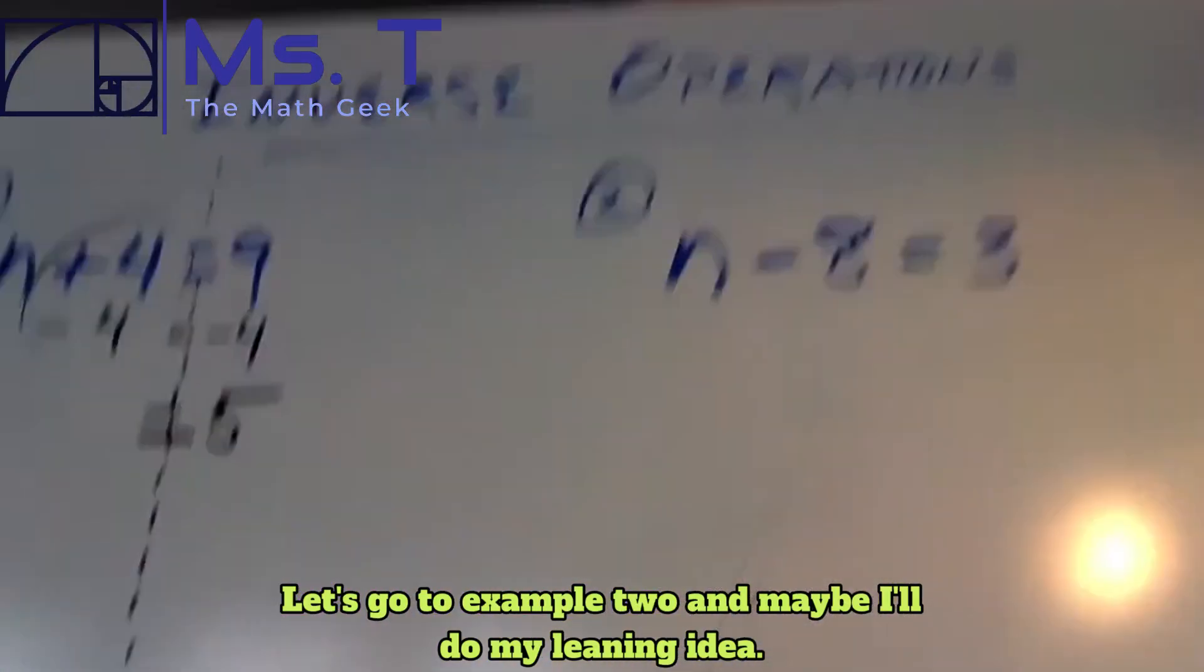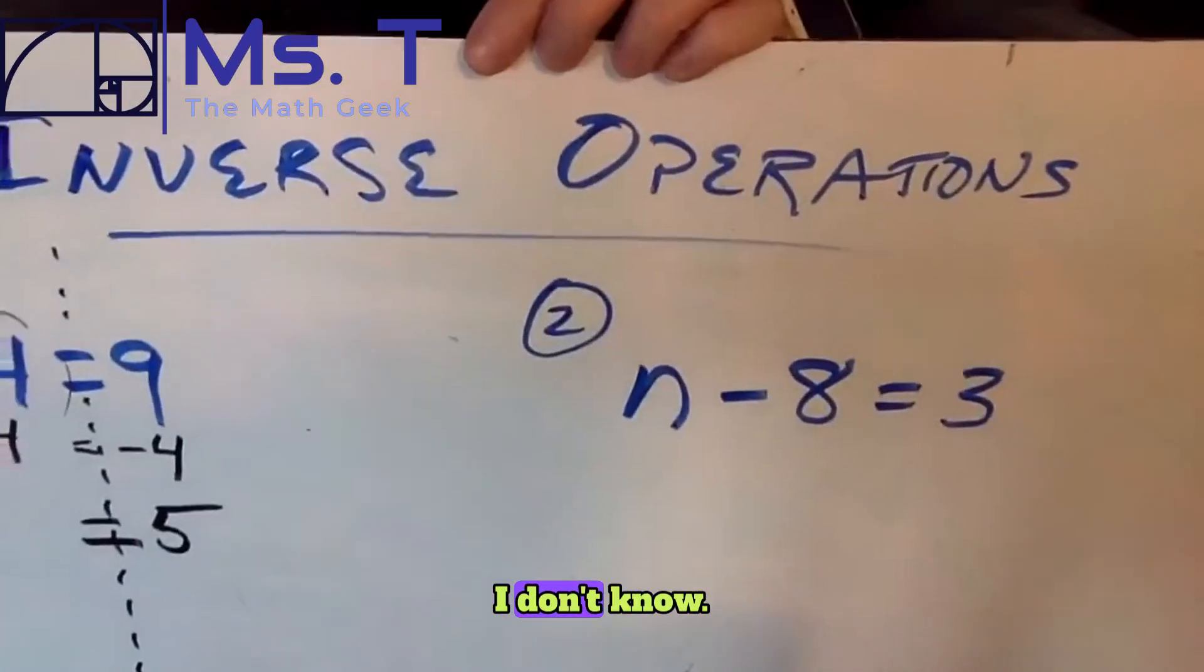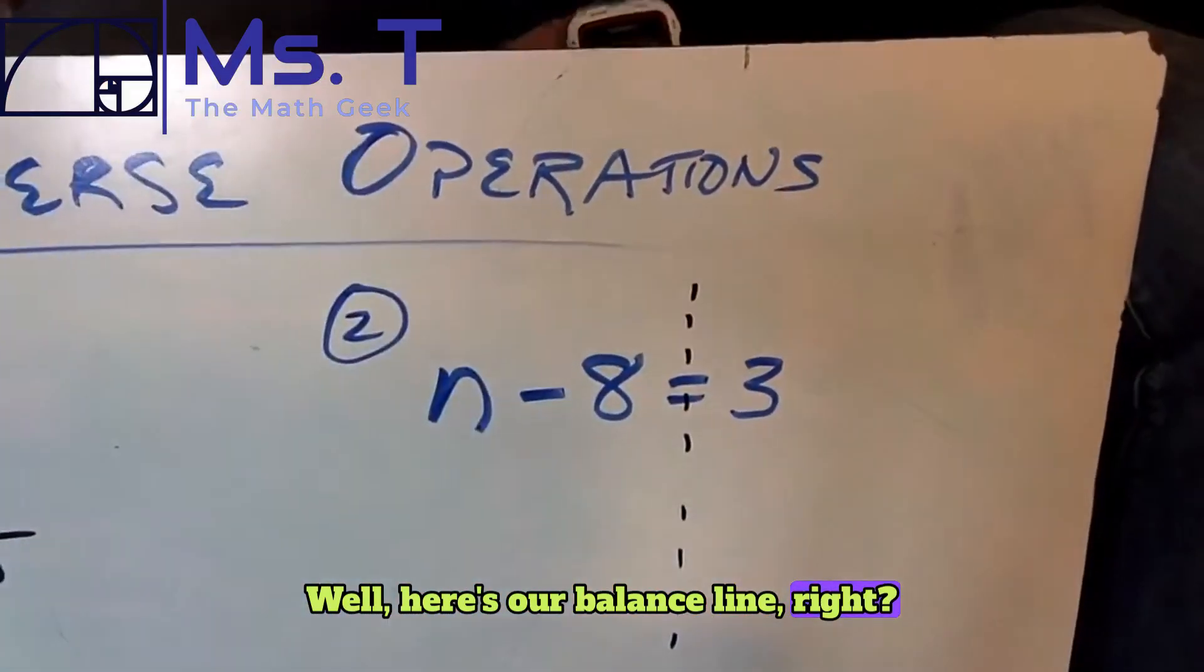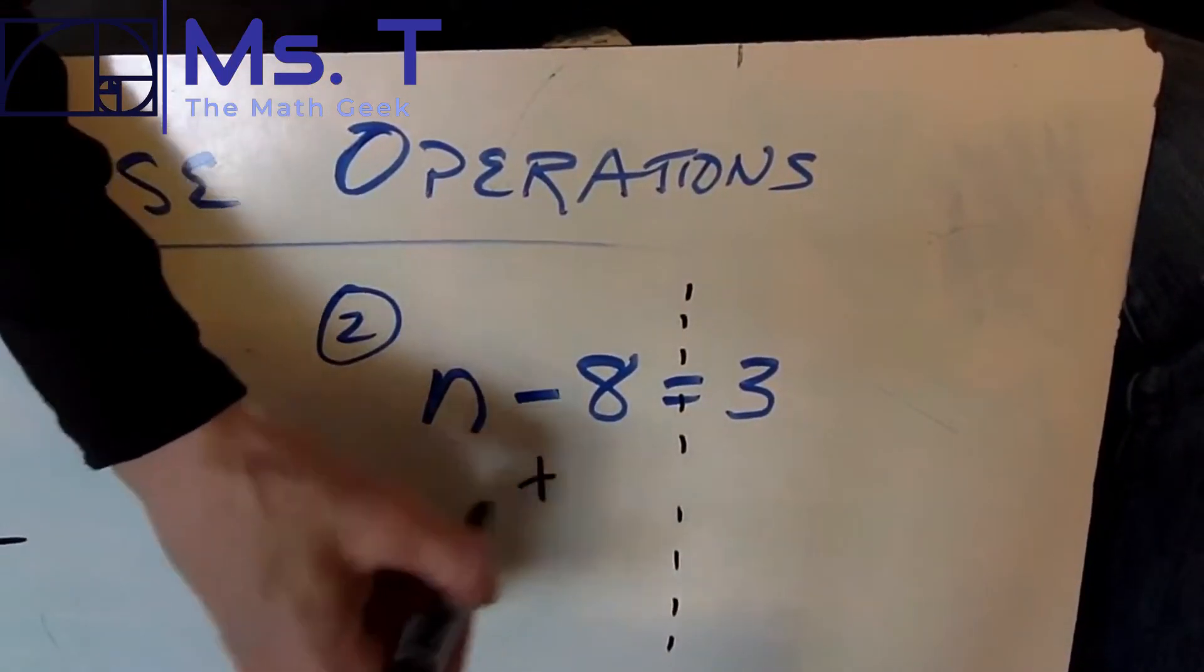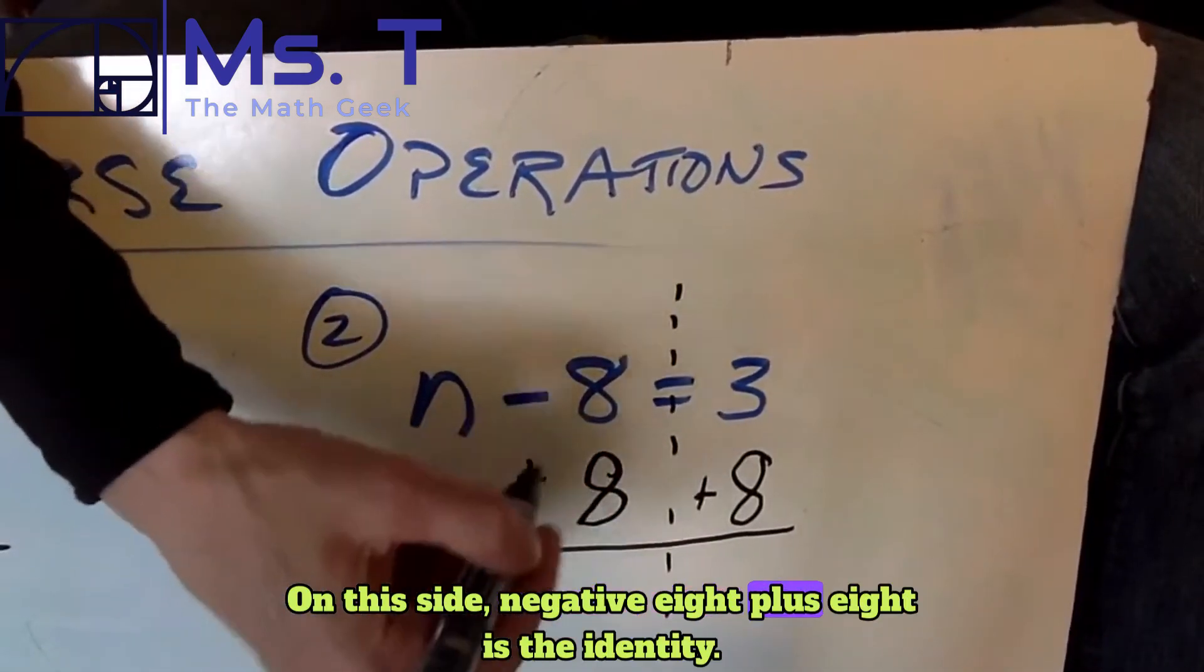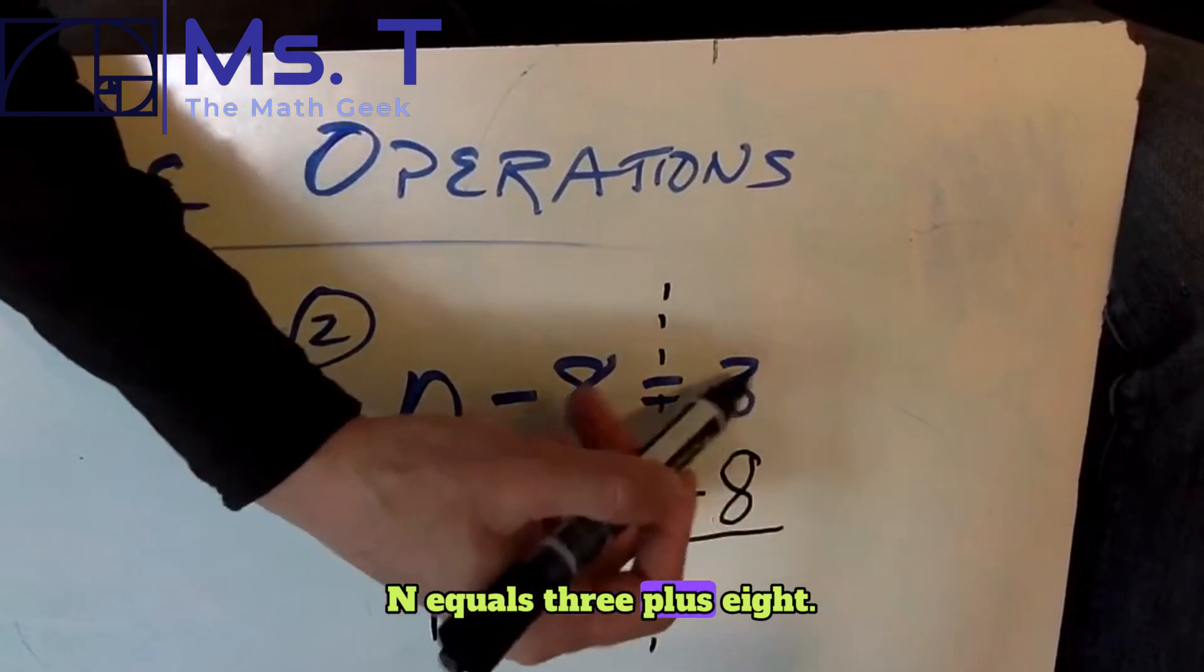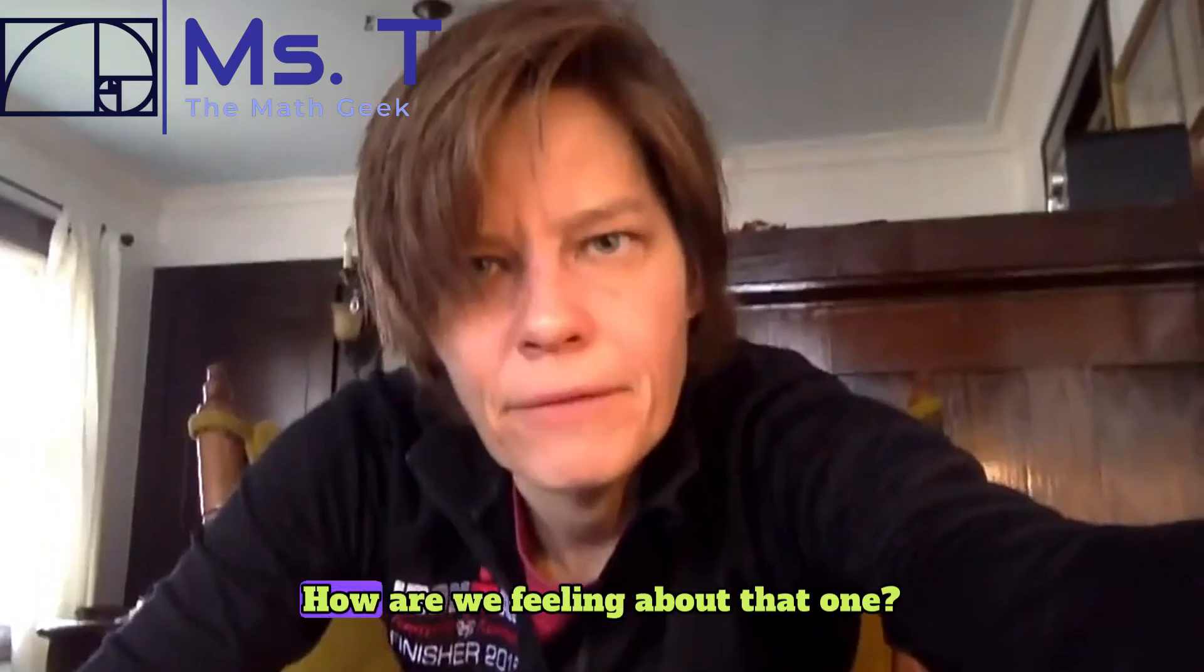Let's go to example two and maybe I'll do my leaning idea. Don't miss me too much. Can we even see it? I don't know. Here's our balance line, right? The inverse of subtraction is addition. We need to add eight, right? On this side, eight minus eight or negative eight plus eight is the identity, so it's zero. We don't write that though. N equals three plus eight. We can use the number line if we need to. 11. How are we feeling about that one?